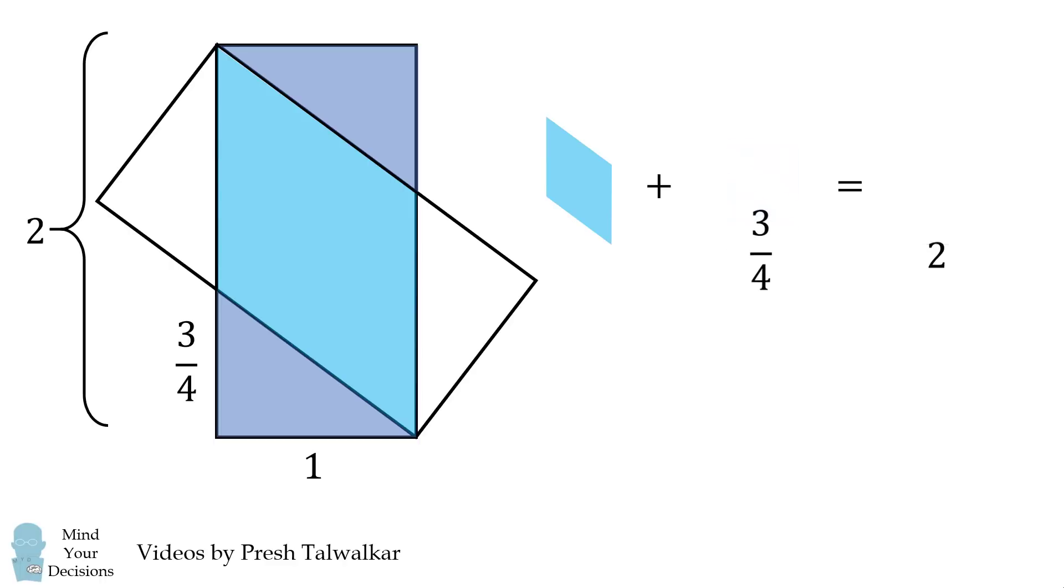We thus can solve for the area of the overlapping region, and it will be equal to 2 minus 3 over 4, which is equal to 5 over 4. And that's our answer.